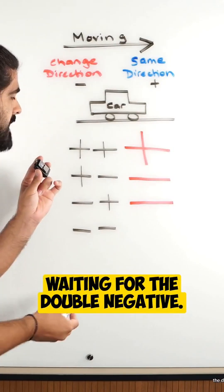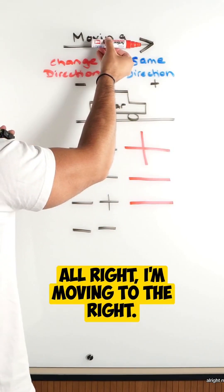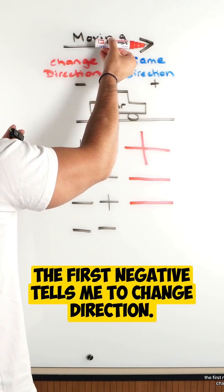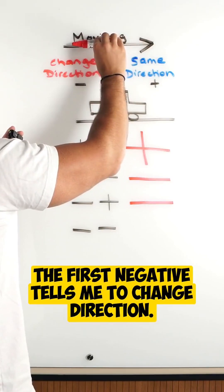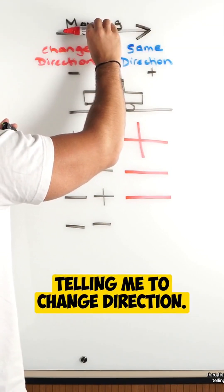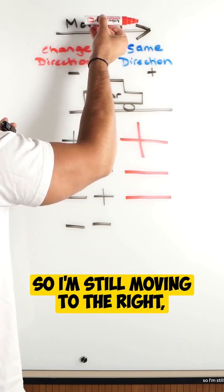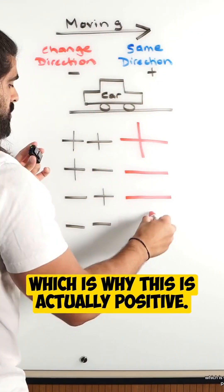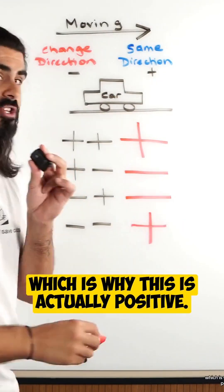Now what we've all been waiting for, the double negative. Alright, I'm moving to the right. The first negative tells me to change direction. Then the other negative is telling me to change direction. So I'm still moving to the right, which is why this is actually positive.